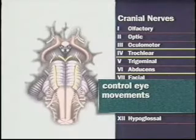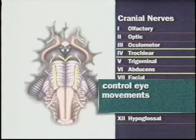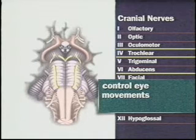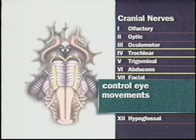Cranial nerves 3, 4, and 6 — the oculomotor, trochlear, and abducens nerves — control eye movements. Because these nerves work together so closely, they're examined as a group.